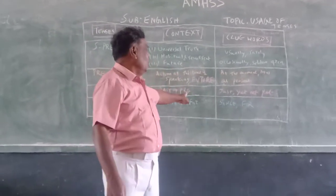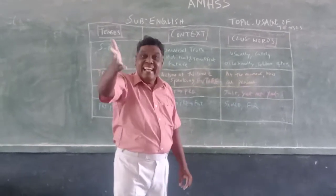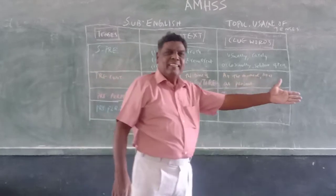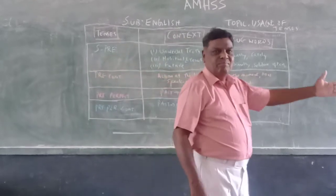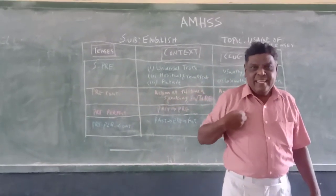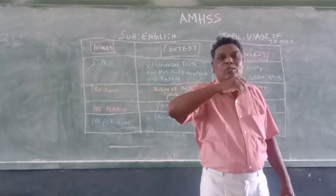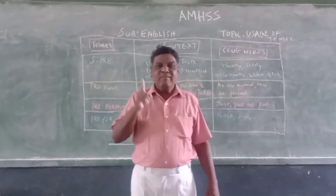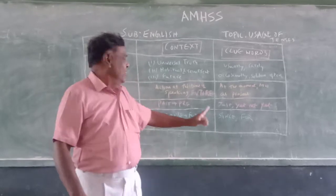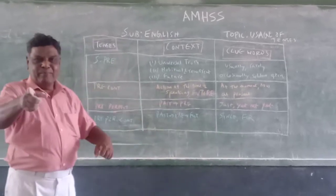The signal words for present perfect are: just, yet, not yet, already. The train has just arrived. They have just completed the work. My friend has just given me his book. We have not yet finished the portion. These are all contexts where you use present perfect.